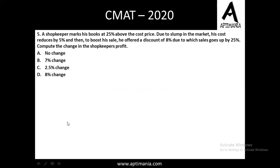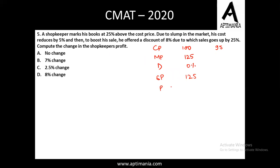Question number 5 is again a question from profit/loss. A shopkeeper marks his goods 25% above the cost price. The cost price is not given, so I'm assuming it to be 100. The marked price will be 125. Due to a slump in the market, his cost reduces by 5%, so the new cost price is 95. To boost his sales he offers a discount of 8%. Since no discount was mentioned in the first case, selling price in the first case is 125, and profit is 25 rupees.